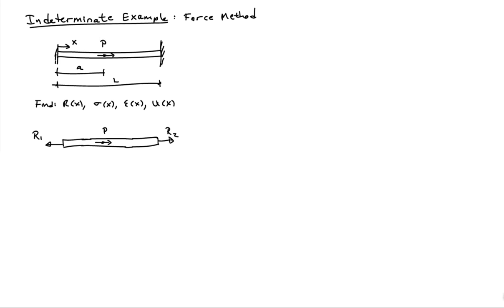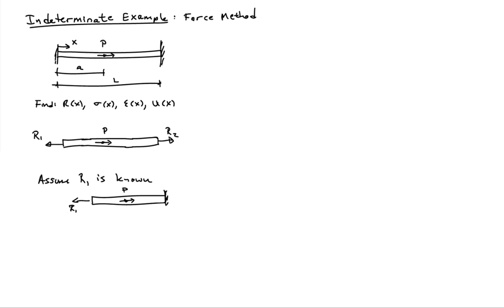One way to deal with such problems is to make them determinate. We assume that one of the unknown reactions is actually known — which seems a bit unusual since we don't know the reactions. But we'll go ahead, solve the whole problem, and then at the very end use additional information about the system to eliminate that extra assumed variable. So let's assume R1 is known, redrawing the picture with R1 on the left, applied load P, and the wall on the right. This problem is now statically determinate.